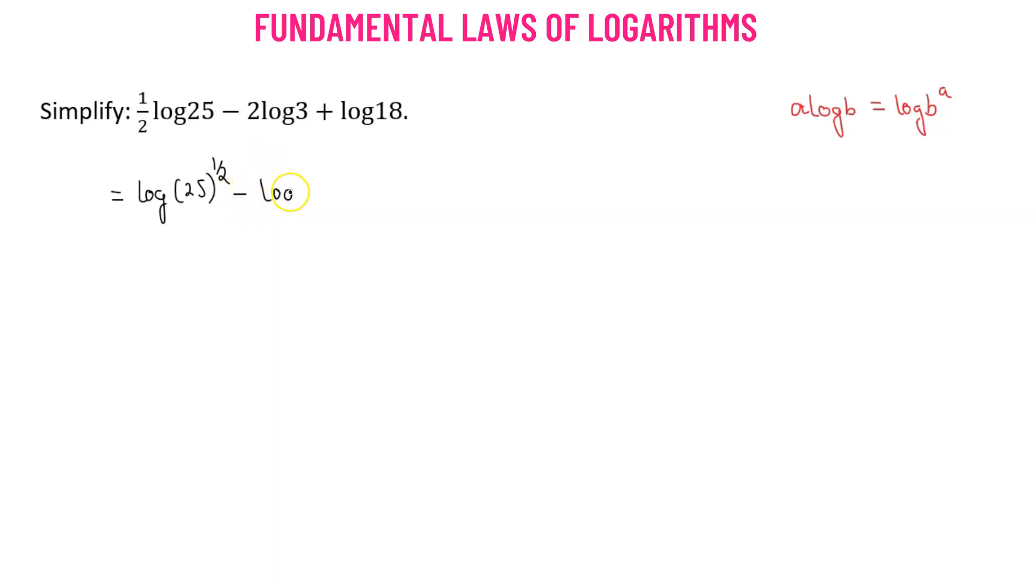Similarly, for the second term, we have log of 3 squared plus log of 18. So we know that 2 times 9 is 18, so we have 2 times 9. 9 can be also expressed as 3 squared.